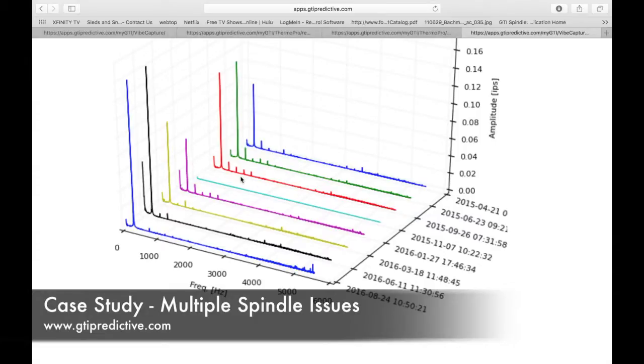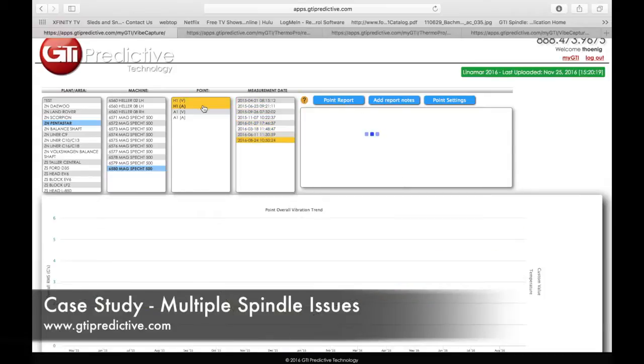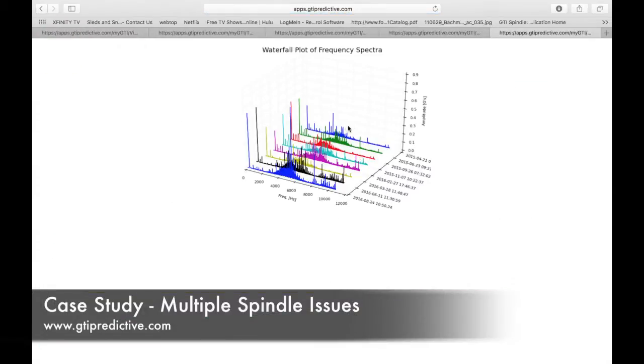We can see again we have a tooling imbalance problem that may be causing a bearing problem. So let's drill down into the acceleration and look at bearings and see what's going on there with the waterfall plot.